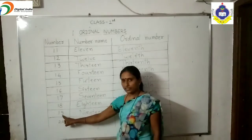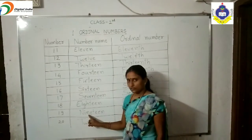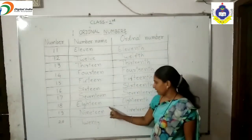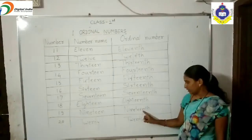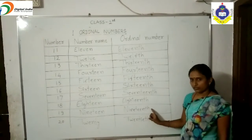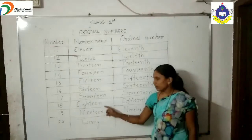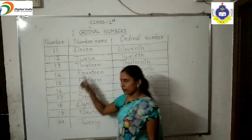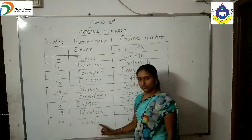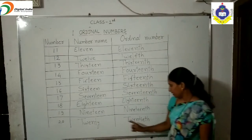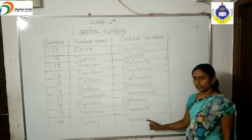Next, 19: the number name is N-I-N-E-T-E-E-N, and its ordinal number is nineteenth, spelled N-I-N-E-T-E-E-N-T-H. Write T-H in front of 19. Next, 20: the number name of 20 is T-W-E-N-T-Y, and its ordinal number is twentieth, spelled T-W-E-N-T-I-E-T-H.